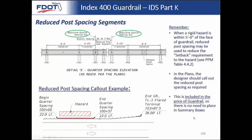IDS part K covers reduced post spacing segments. Call out begin quarter spacing at a station and end at a station. Reduced post spacings are included in the standard guardrail pay item, so there's no need to tabulate them — you just want to show them clearly in your plan view. The standard will automatically adjust those spaces accordingly and incrementally.